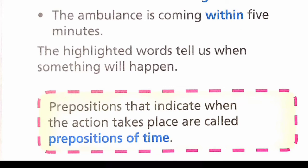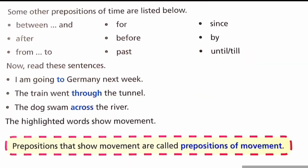Now let us read these sentences. I am going to Germany next week. The train went through the tunnel. The dog swam across the river. Here, these highlighted words show movement. Prepositions that show movement are called prepositions of movement.